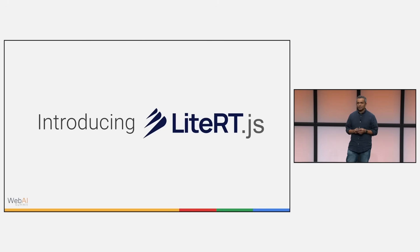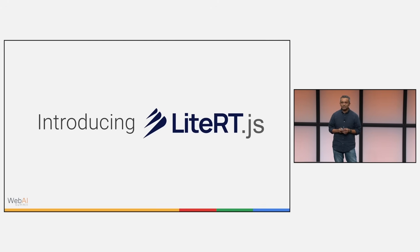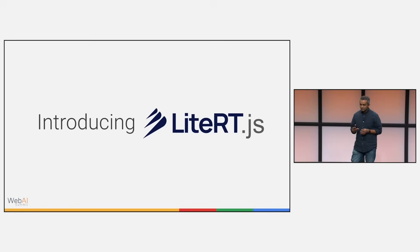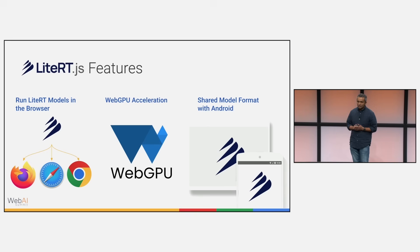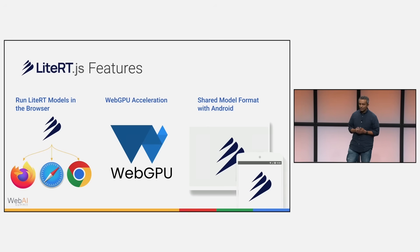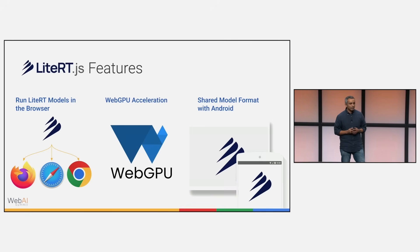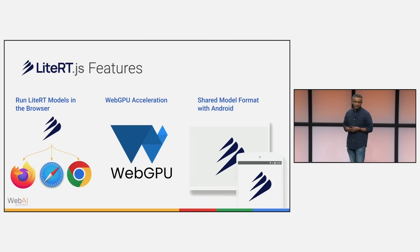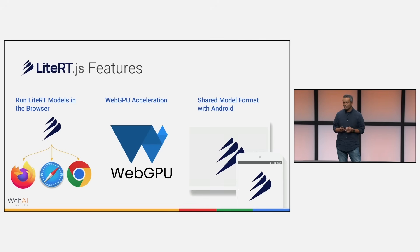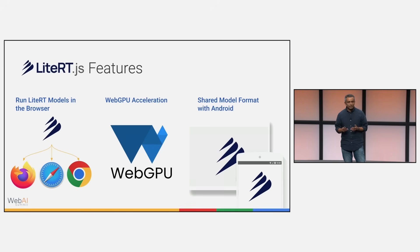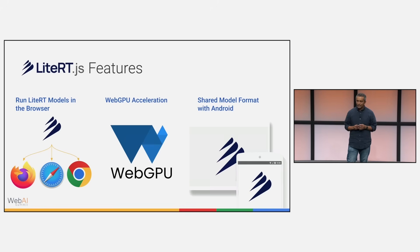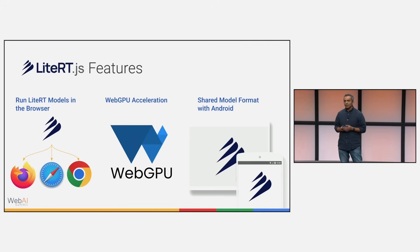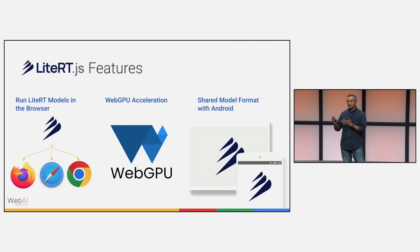To that end, we would like to introduce LightRT.js today. This is Google's new runtime for the web. LightRT.js — JS ending for JavaScript — has many great features. It enables running models on several popular browsers. We've also expanded support for WebGPU, which is going to enable improved performance on GPU accelerators in the browser. And what's even more interesting is that this is a shared model format with Android, making it a cross-platform solution. The models that run on mobile with the TFLite format can also be scaled over for web.